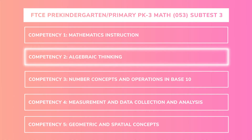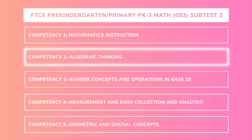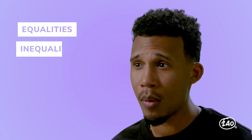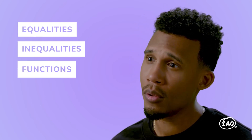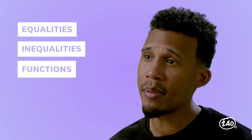Competency two covers algebra. This is a test for teaching pre-kindergarten through third grade, so it may not be as bad as you think. But this competency takes up 16% of your test — about seven questions. You're going to need to deal with equalities and inequalities, apply function rules, and identify different types of sequences.